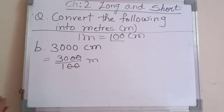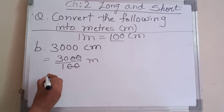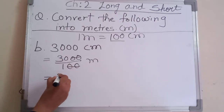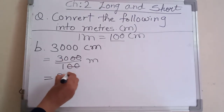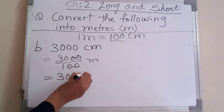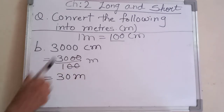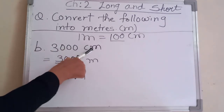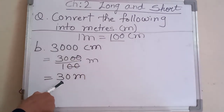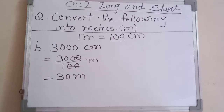Cut the zeros from the last digits — same number of zeros in numerator and denominator can be cancelled. After cutting, the answer is thirty meter. So three thousand centimeter when converted gives thirty meter.